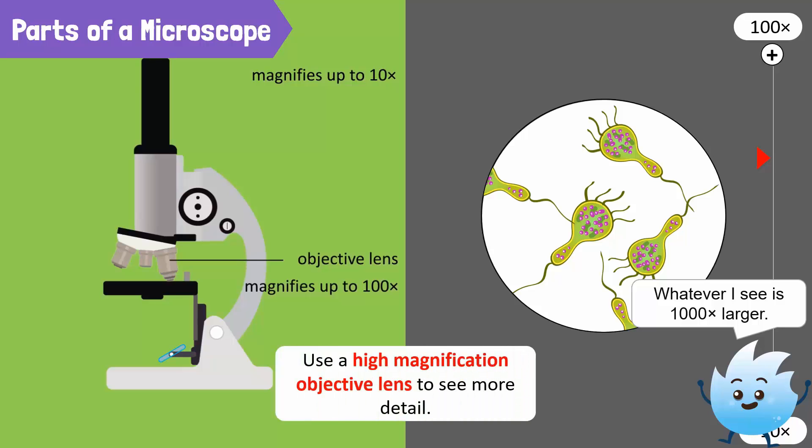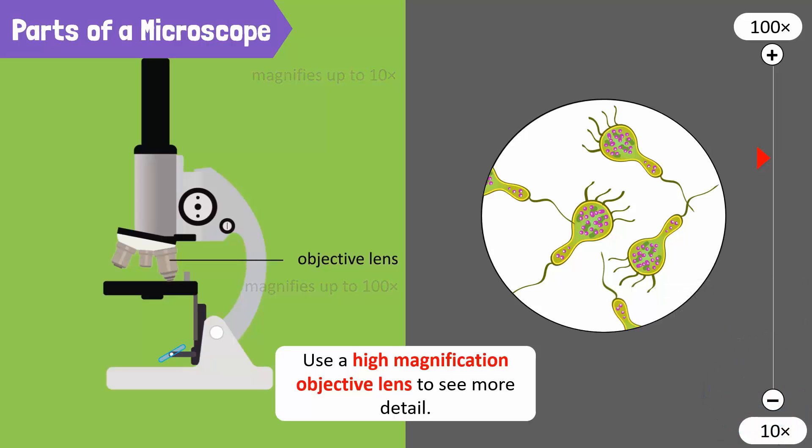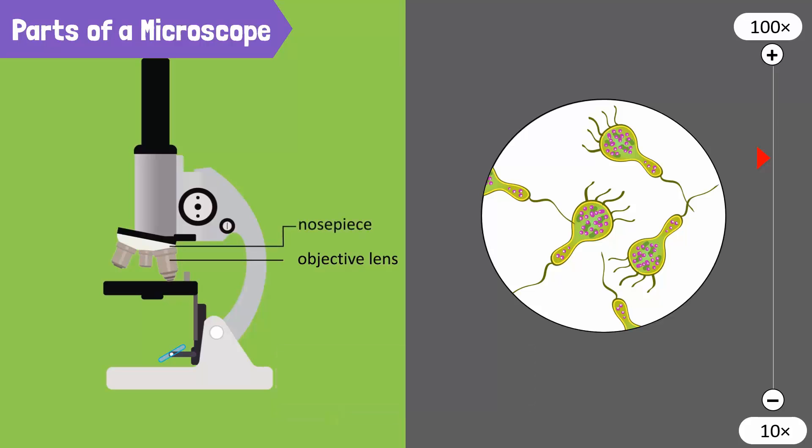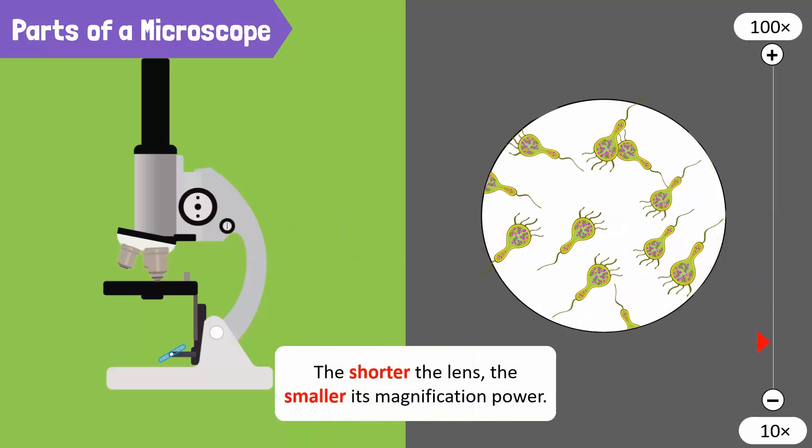You can use a high magnification objective lens to see the specimen in more detail. You first choose the lowest objective lens by using the revolving nose piece. The shorter the lens, the smaller its magnification power.